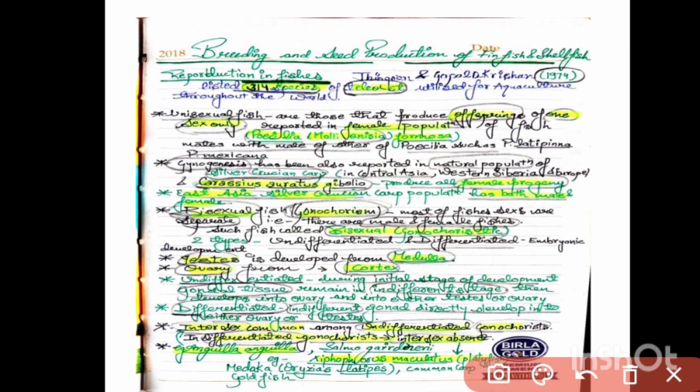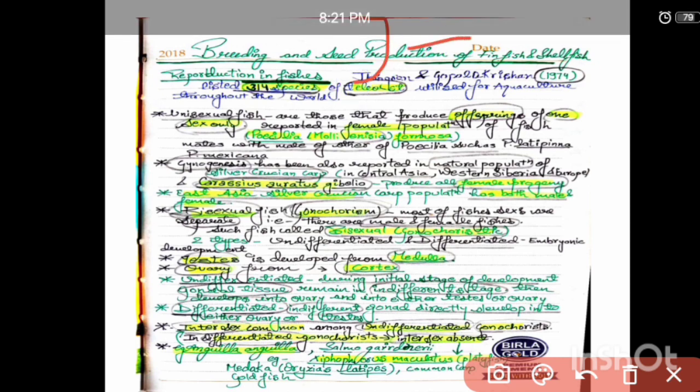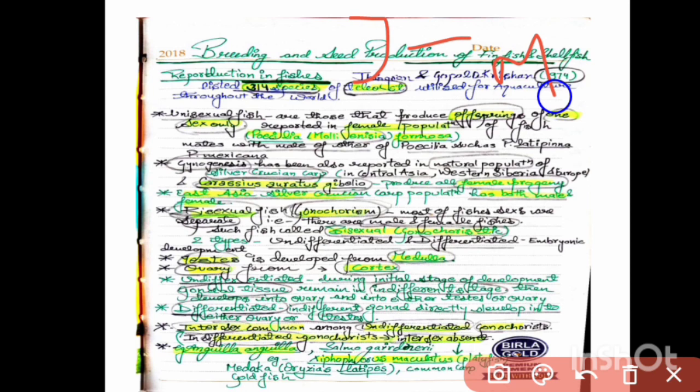In differentiated gonadism, gonads directly develop into either ovary or testes without passing through an indifferentiated state. Testes are developed from the medulla and ovary is developed from the cortex. Keep in mind that intersex is common among undifferentiated gonochrists — meaning both sexes can be present — whereas in differentiated gonadism, intersex is absent.